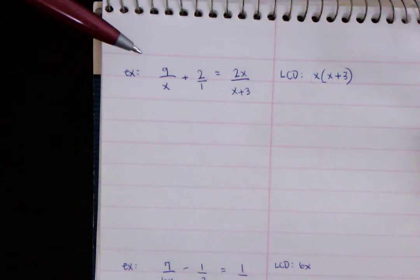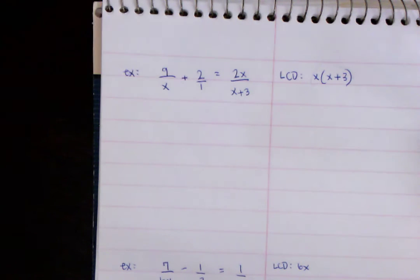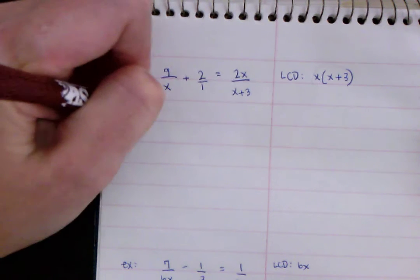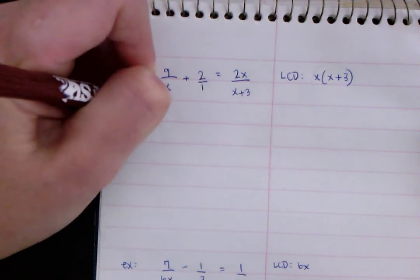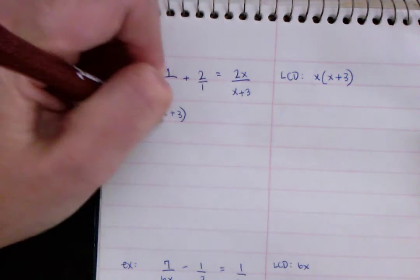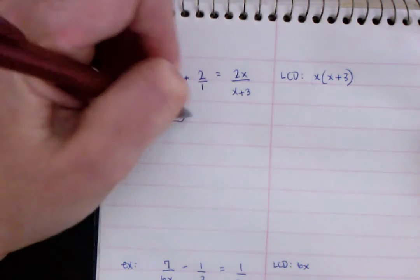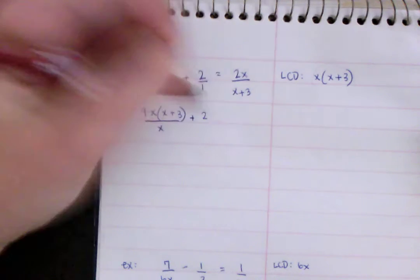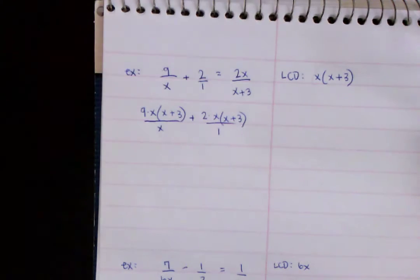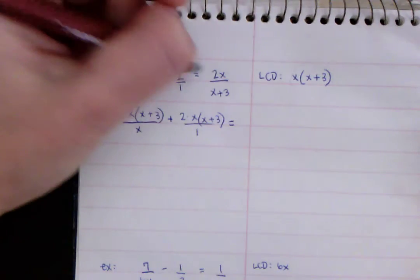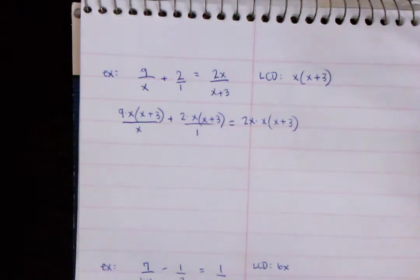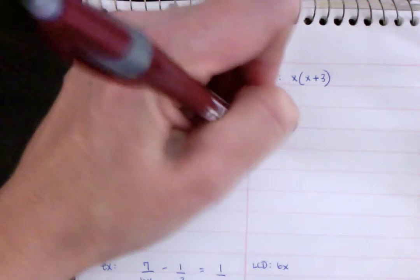So you're going to multiply every term by that. Okay. And again, what's going to happen is they're going to cancel. Some of them are going to cancel. And some of them won't. Like this one, we'll see that it doesn't. So we're going to multiply the tops by X times X plus 3. So we're going to say 9 times X and X plus 3. So we're multiplying the top of this fraction by our LCD. Then we put it over the bottom of the fraction. Multiply again the top of the fraction by the LCD. So 2, we have X, X plus 3. And this is over 1, but it won't really matter. And then again, 2X and then times X and X plus 3, all over X plus 3.